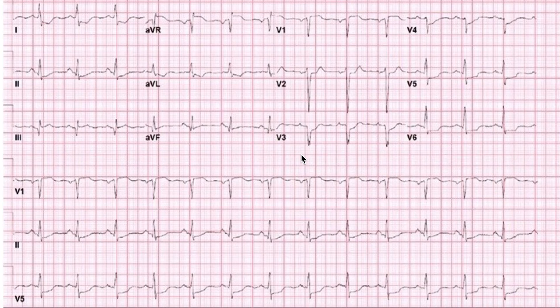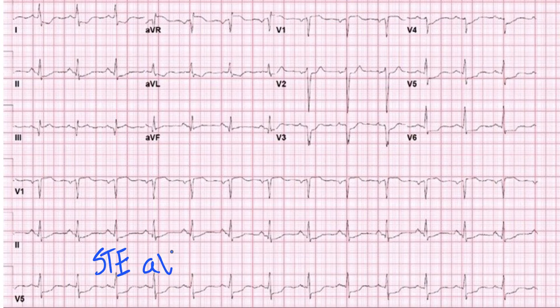Today we're going to do an episode of 5-Minute EKG. This is a brief video on a various EKG finding where we look at an actual EKG from the clinical arena. I think learning is oftentimes a little better when you look at actual EKGs rather than just computer-generated EKGs. For this episode, we're going to be looking at ST elevation in AVR with diffuse ST depressions.